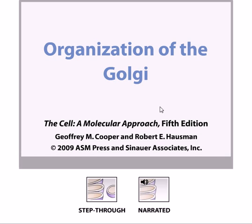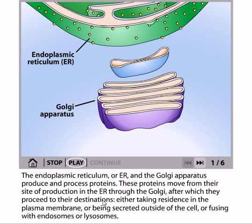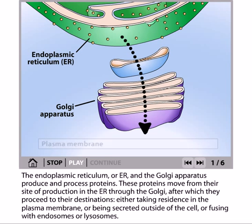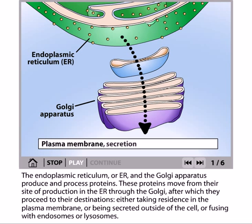Let us look at the organization of the Golgi and how the Golgi apparatus maintains its structure and functions. In the endoplasmic reticulum, the Golgi apparatus processes proteins. These proteins move from their site of production in the ER through the Golgi, after which they proceed to their destinations — either residing in the plasma membrane, being secreted outside the cell, or fusing with endosomes or lysosomes.